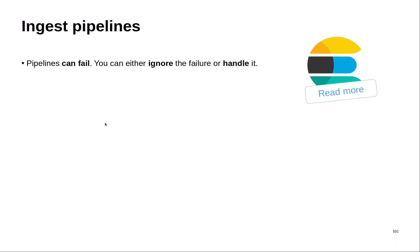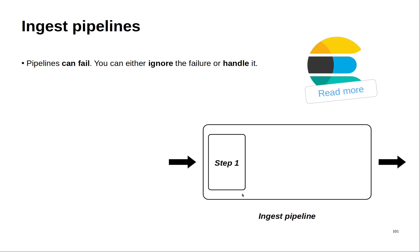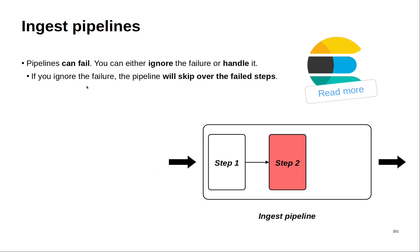I mentioned before what happens if one of the steps fails. This is something that can happen because pipelines may sometimes fail. If that happens, you have two options: you can either ignore or handle the failure. For example, I have my ingest pipeline — the first step executed successfully, but when I started to execute the second step, I got an error. If I decide to ignore the failure, the pipeline will skip the step that failed. In this example, step two failed, so it will just skip it and execute the third step.